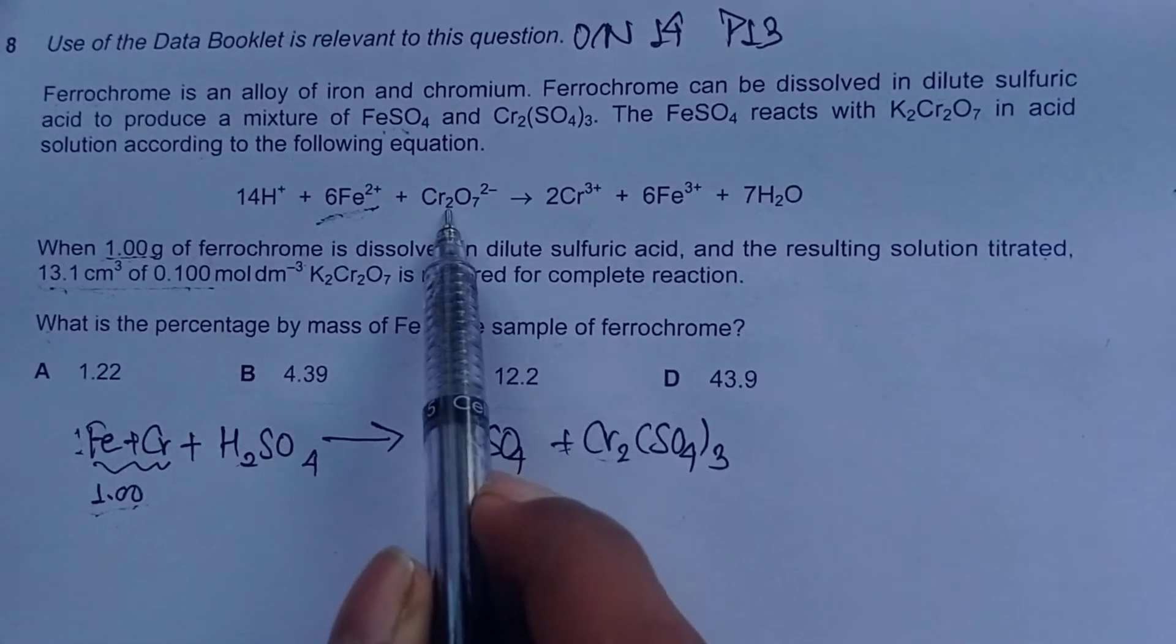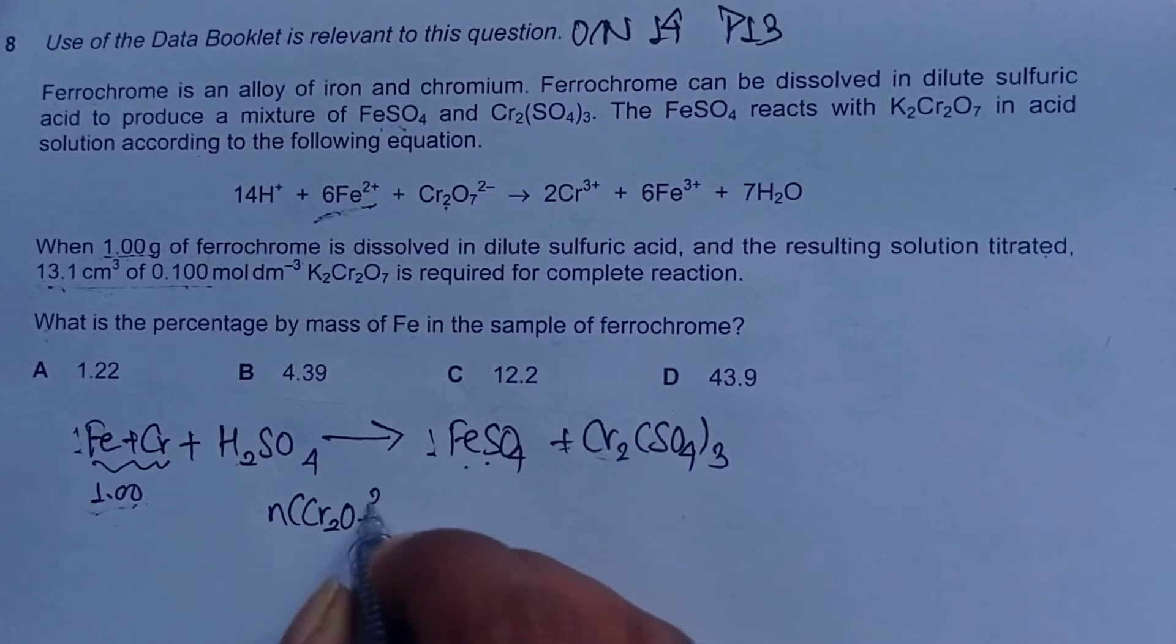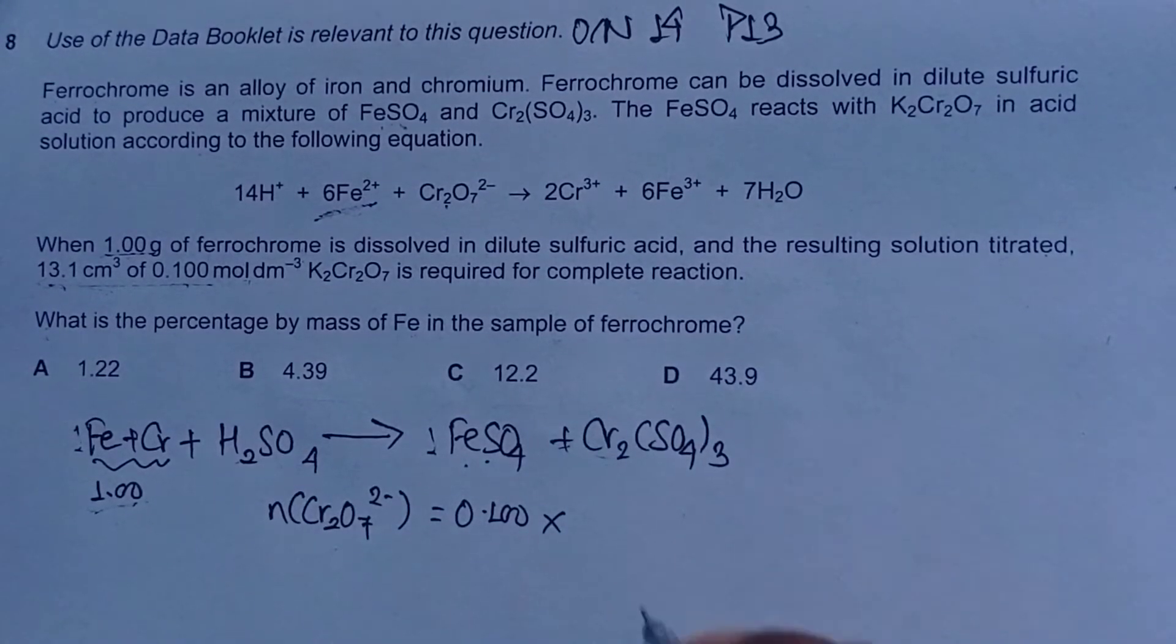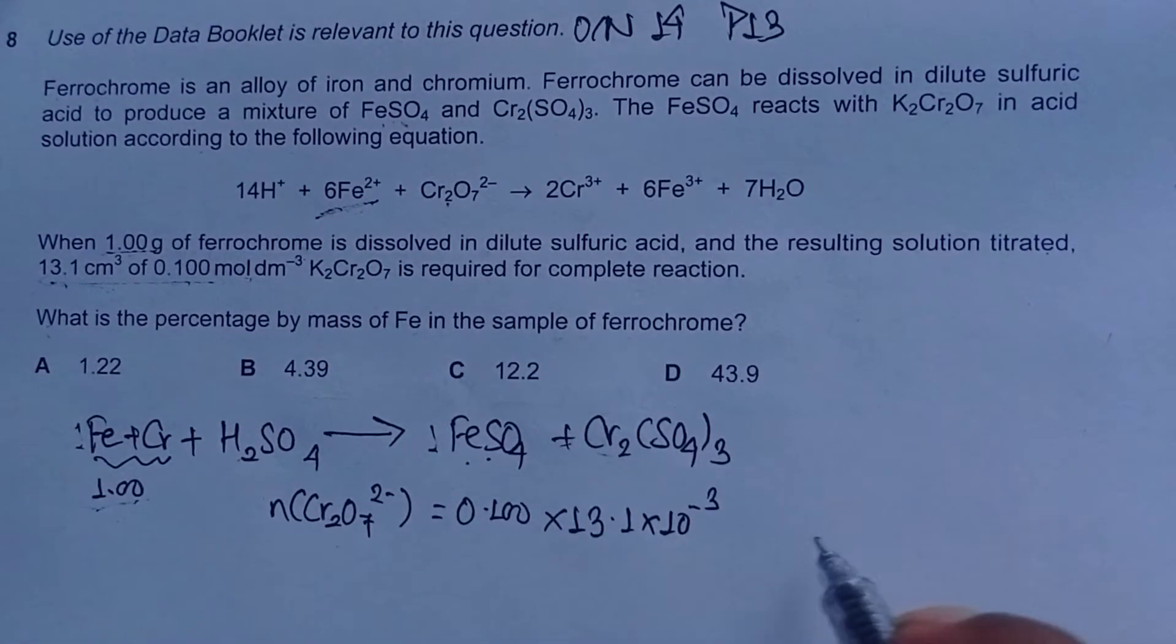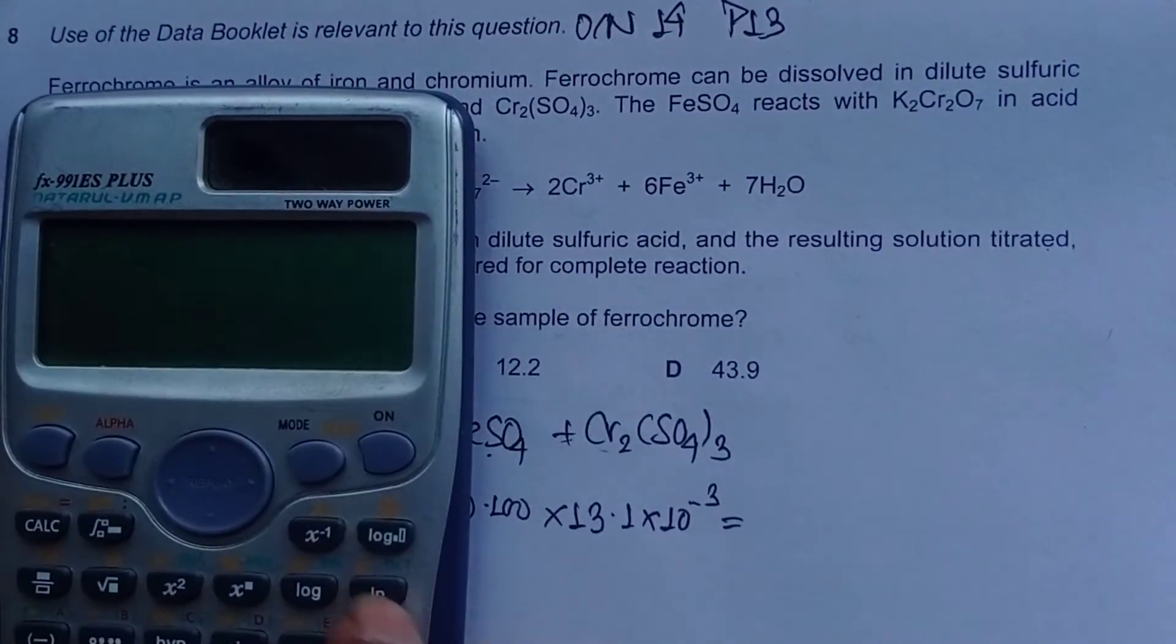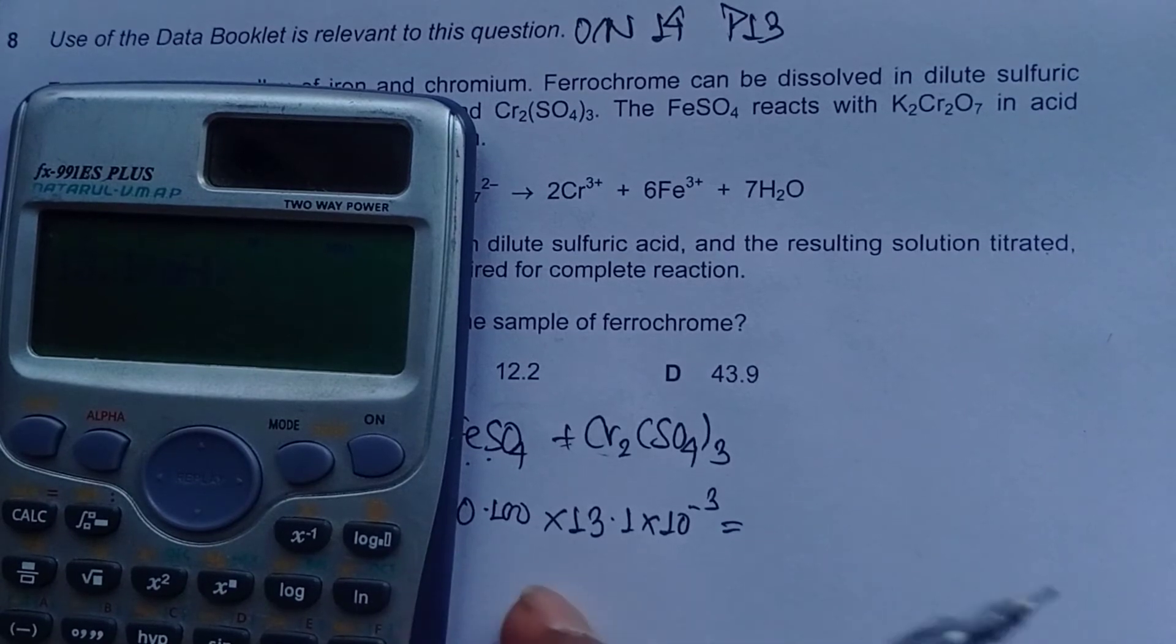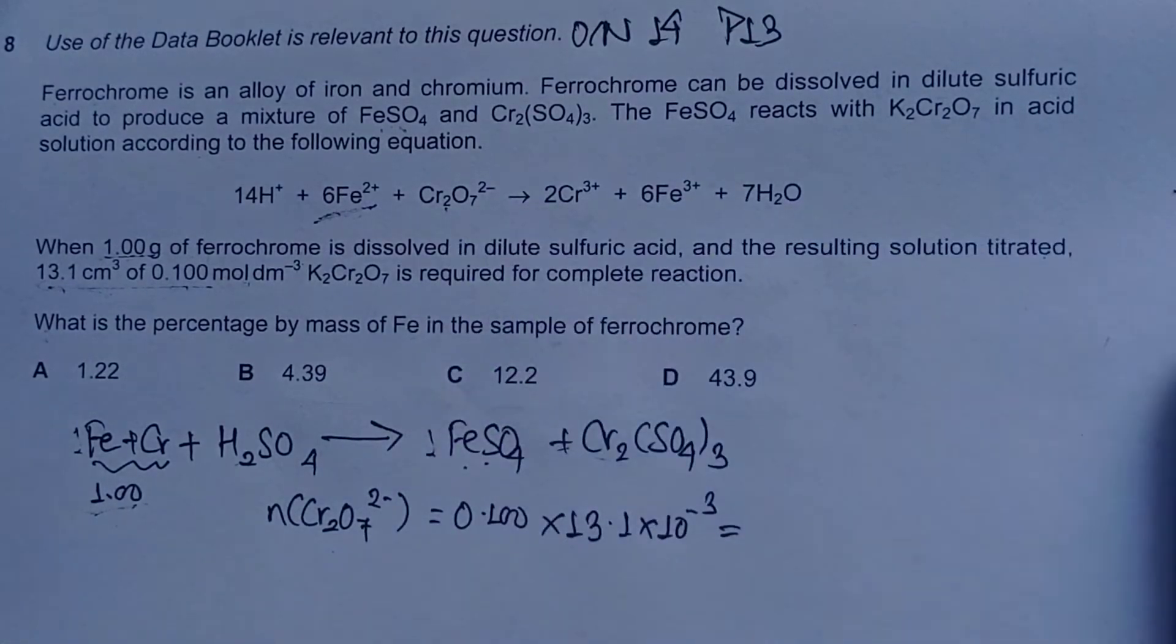We calculate moles of dichromate: its concentration is 0.100 mol/dm³, and we convert the volume into dm³, which is 13.1 × 10⁻³. So this gives us 0.1 × 13.1 × 10⁻³ = 1.31 × 10⁻³.